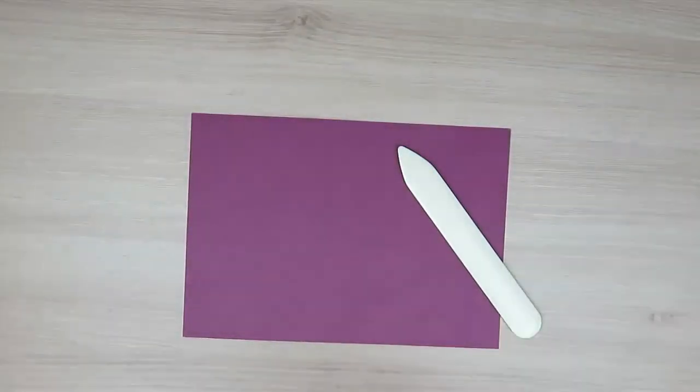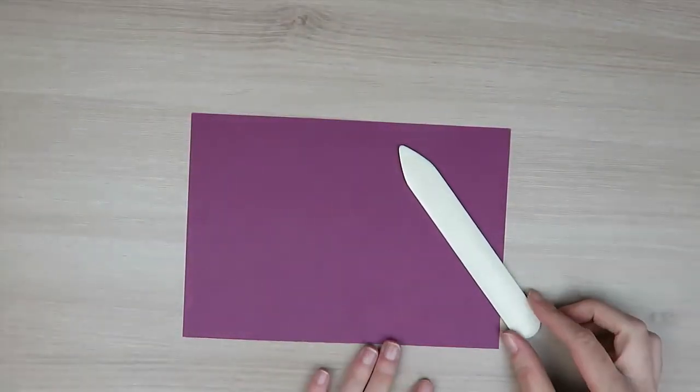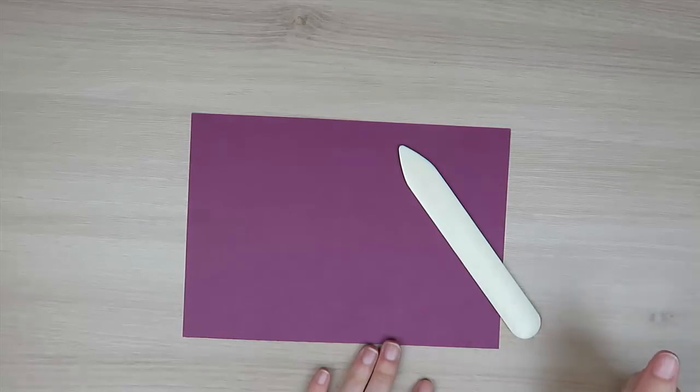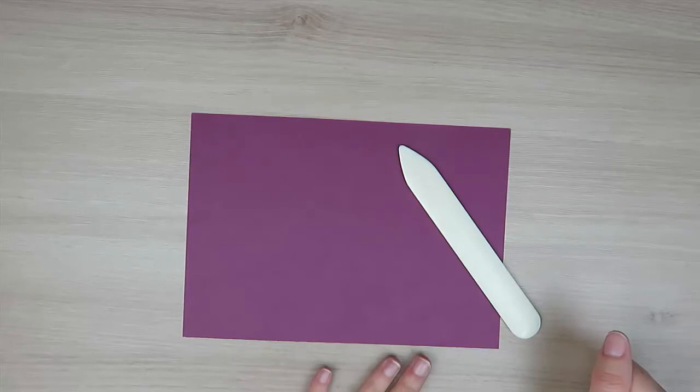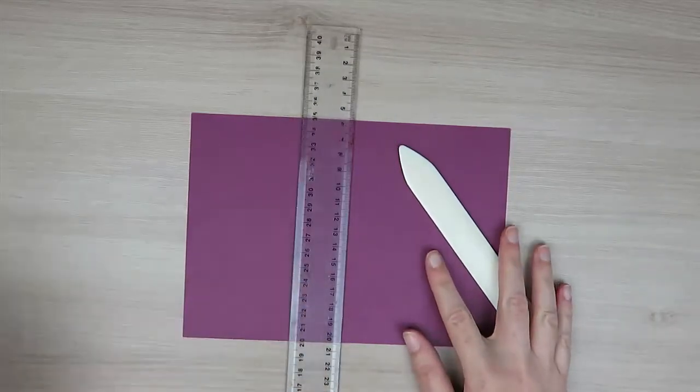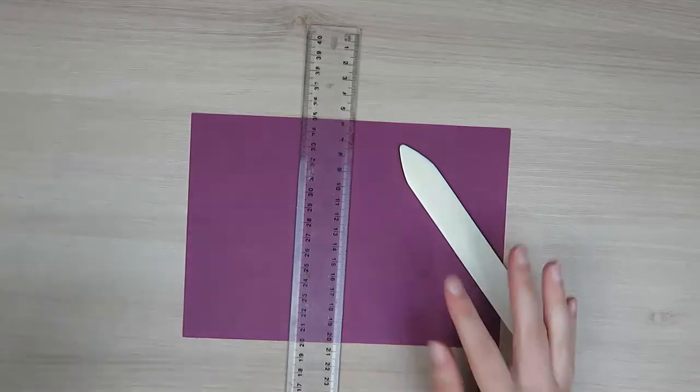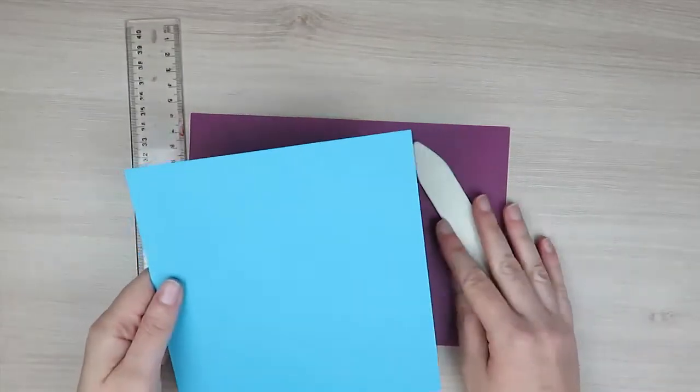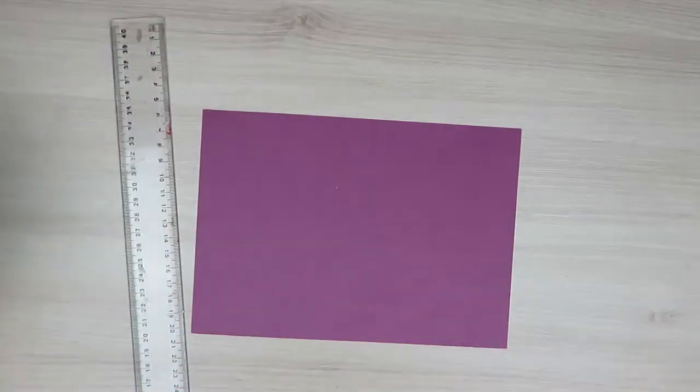So let me show you a few different ways that you can use your bone folder to create a score line in your cardstock. The first way I'd like to show you is using a ruler. So you have some options. You can use a traditional ruler or a steel ruler, and you want to determine where you want your score line.